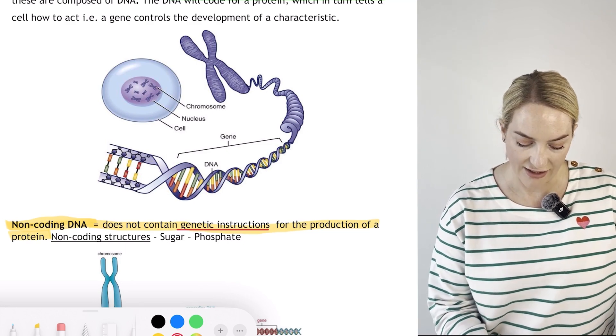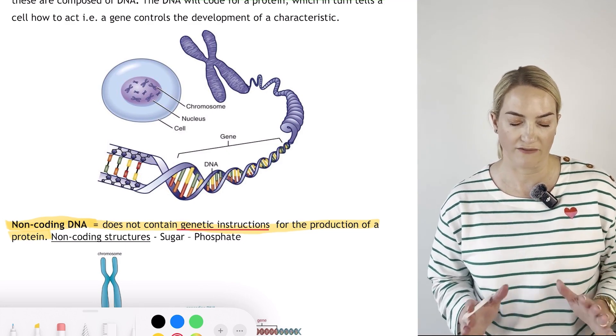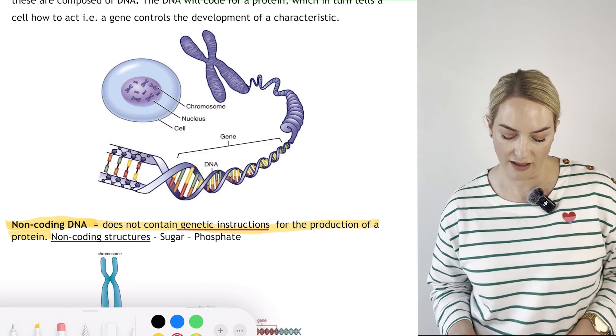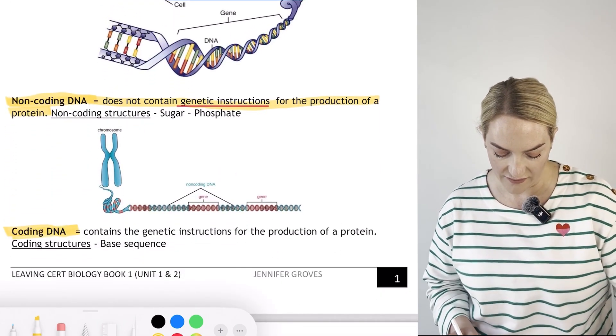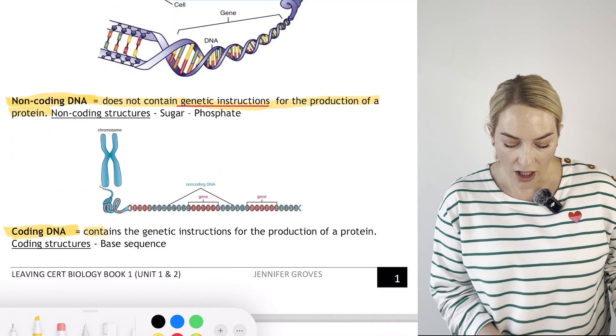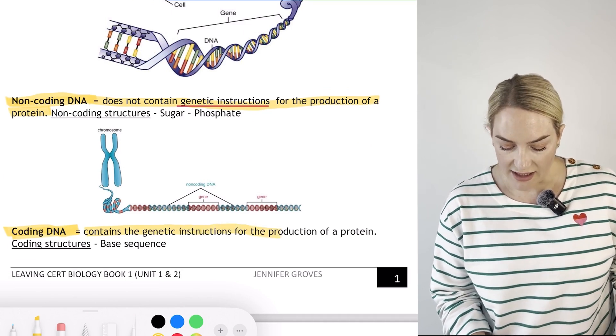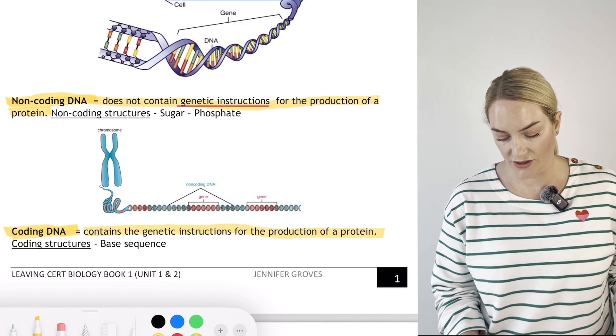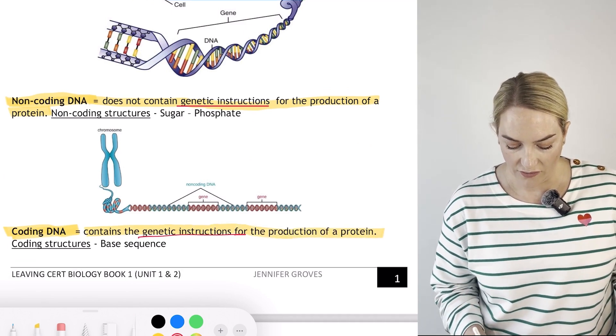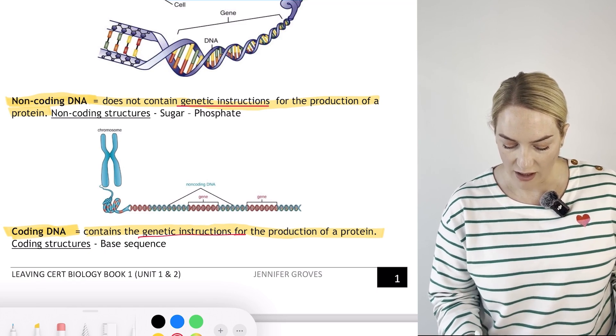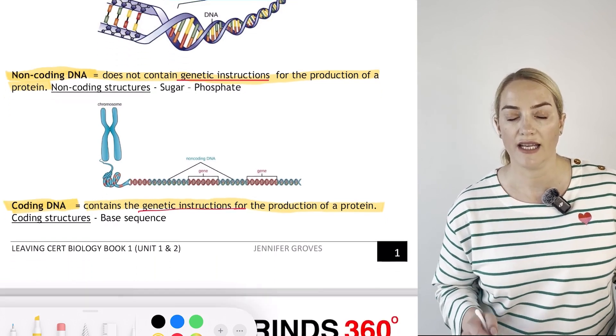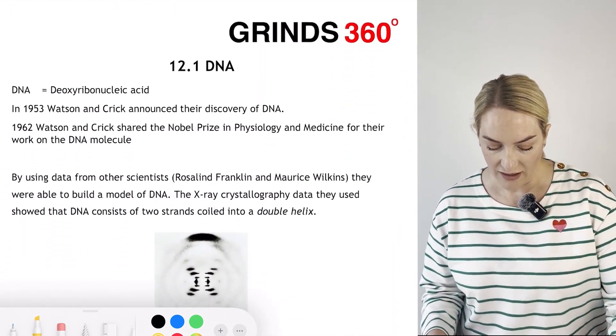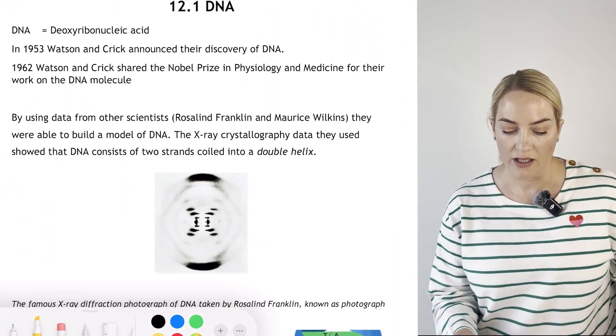The non-coding structures are your sugar and phosphate. Coding DNA contains the genetic instructions for the production of a protein. What's really important - students remember 'genetic instructions.' The coding part is the base part. DNA stands for deoxyribonucleic acid.